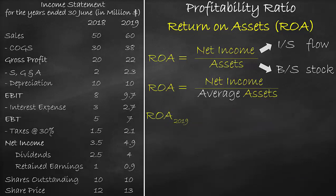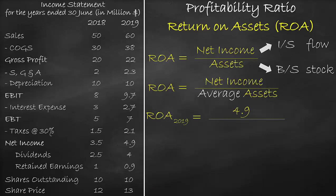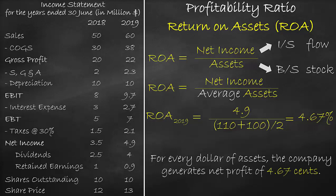Next, let's calculate ROA for 2019. Net income is equal to 4.9 million dollars, divided by the average assets for 2019 and 2018. We have assets of 110 million in 2019 and assets of 100 million in 2018. So in our formula we divide by average assets of (110 million plus 100 million) divided by 2. This is equal to 4.67%. The unit of ROA is a percentage, meaning that for every dollar of assets the company generates a net profit of 4.67 cents.